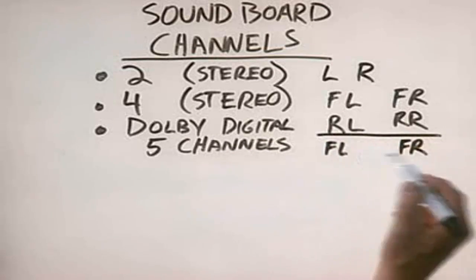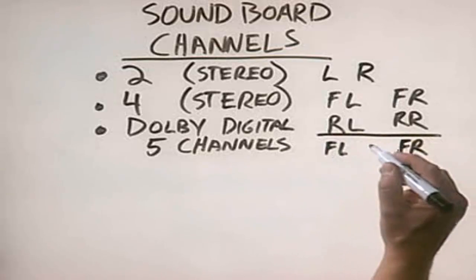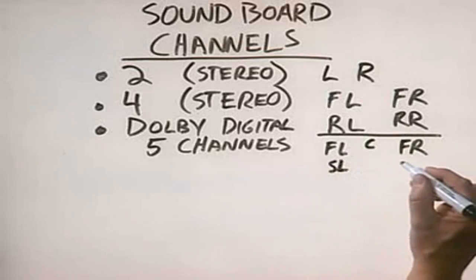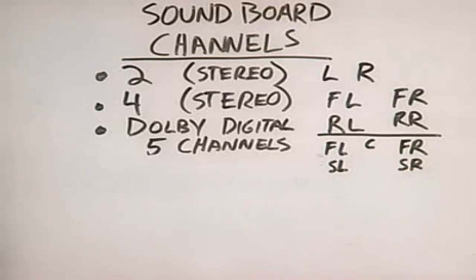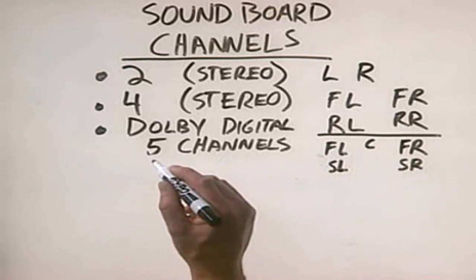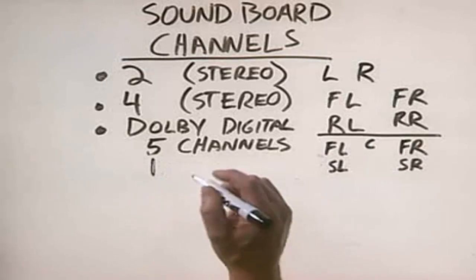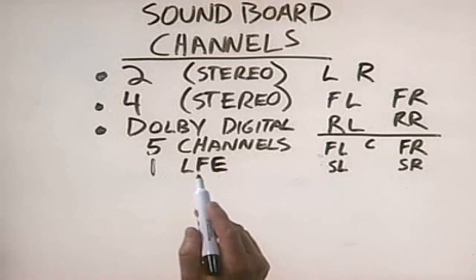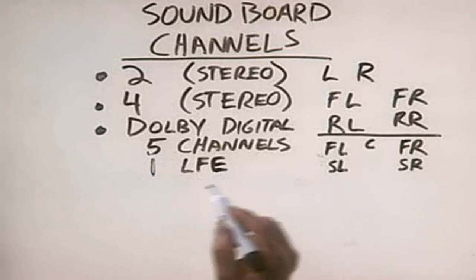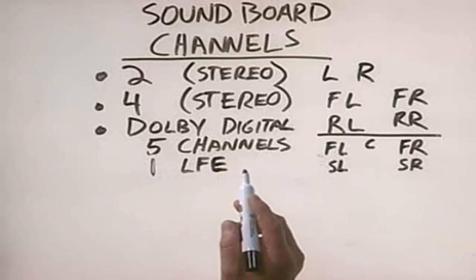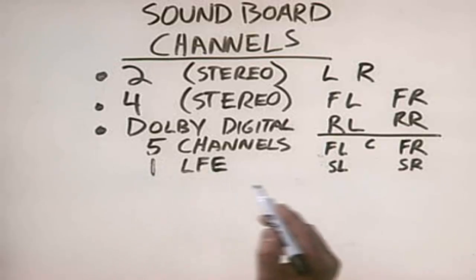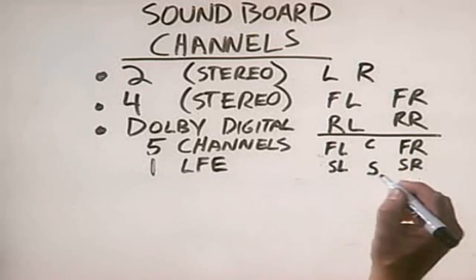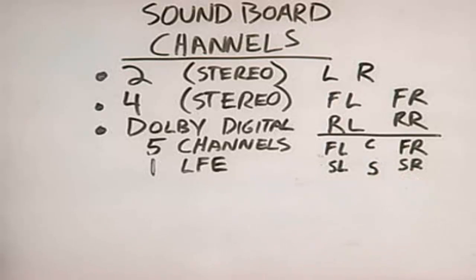center, surround left, and surround right. Dolby Digital also includes one other low-bandwidth channel called the LFE channel, which stands for Low Frequency Effect. This channel is responsible for producing low-frequency special effects sounds that really makes your system come to life with lots of rumbling and deep sounds. Sometimes it's also called the subwoofer channel, so we'll put an S right here to indicate our subwoofer.